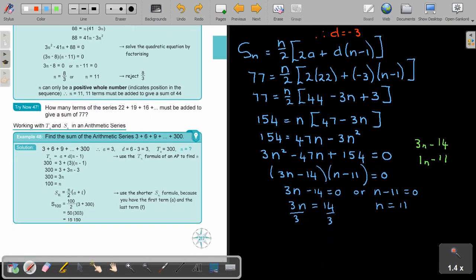The value of N will be 4 and 2 thirds and the value of N will be 11. Therefore, N is equal to 11 or, it cannot be a fraction. So, you must add 11 terms to get a sum of 77. This will be not applicable. You must add 11 terms to get a sum of 77. Let's move on.